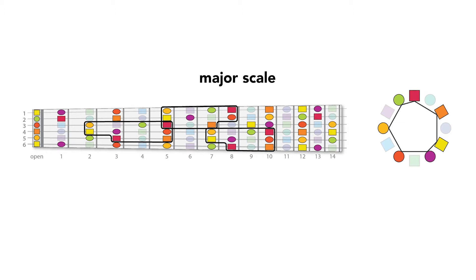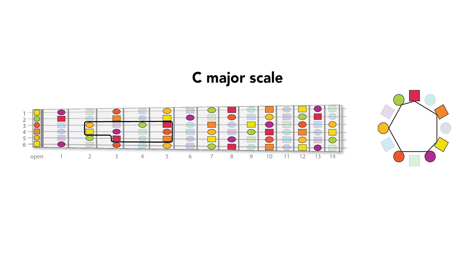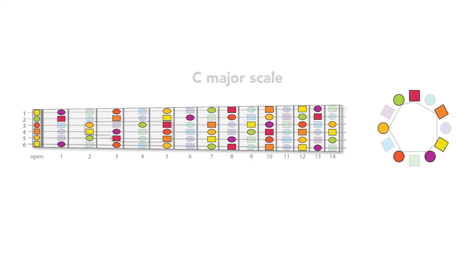In the key of C, for example, this pattern is C, D, E, F, G, A, B, C. Or said using scale degrees, that's 1, 2, 3, 4, 5, 6, 7, 1.